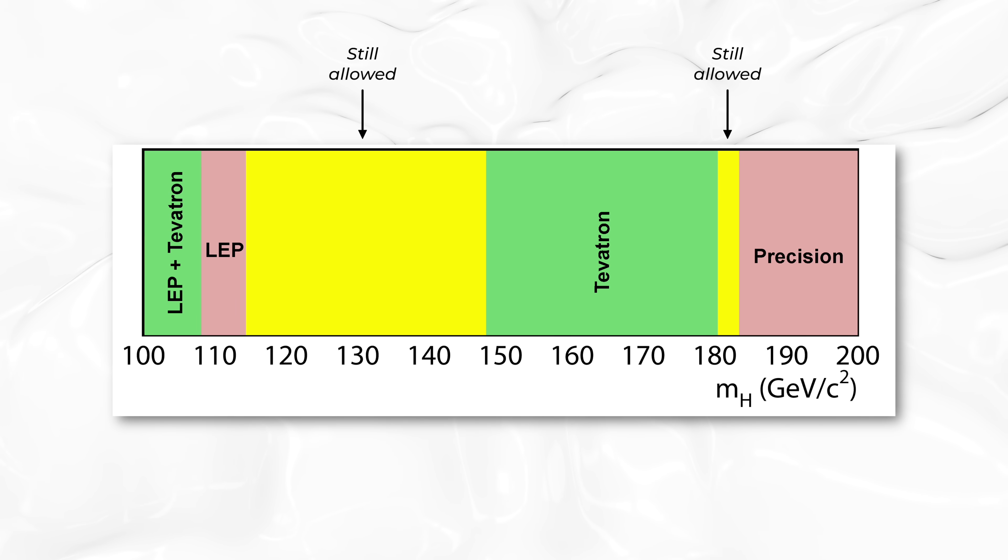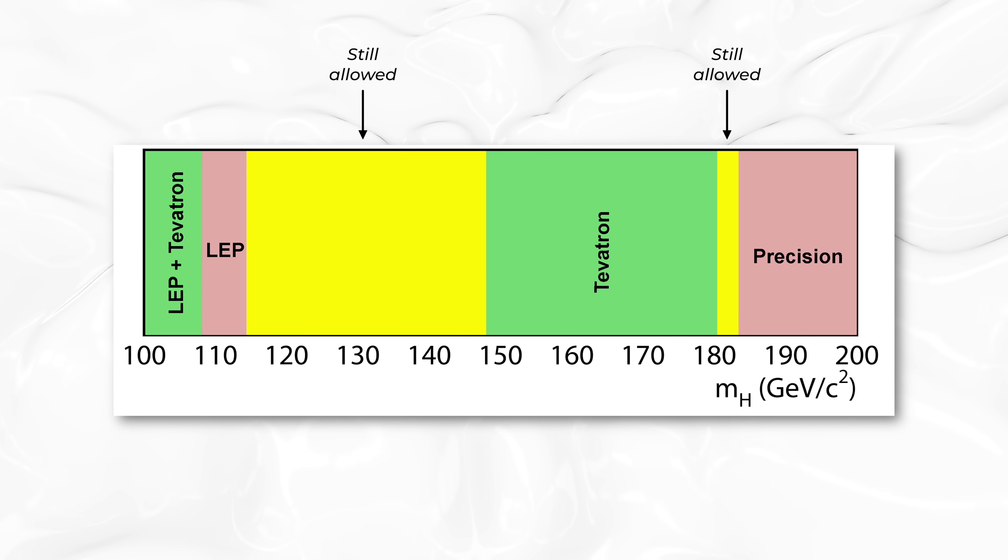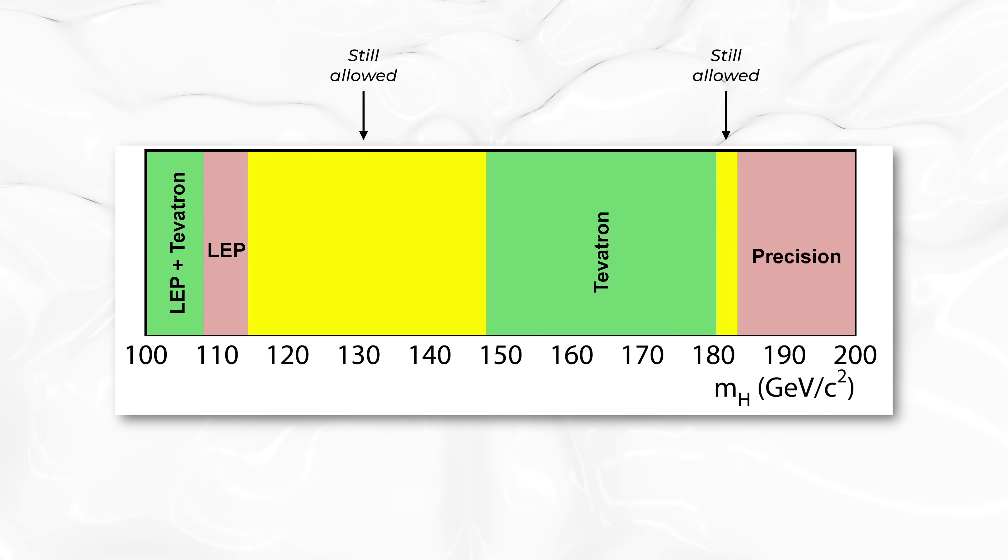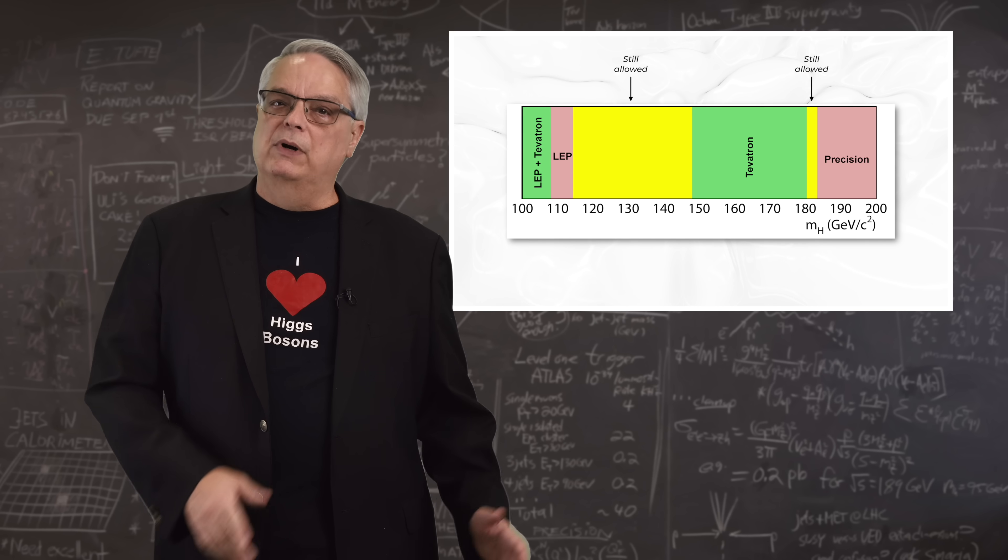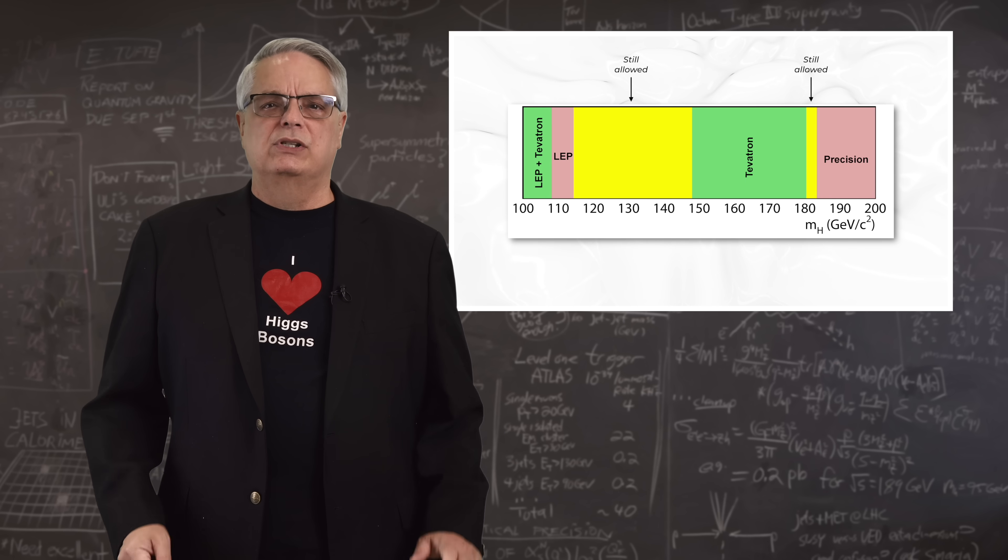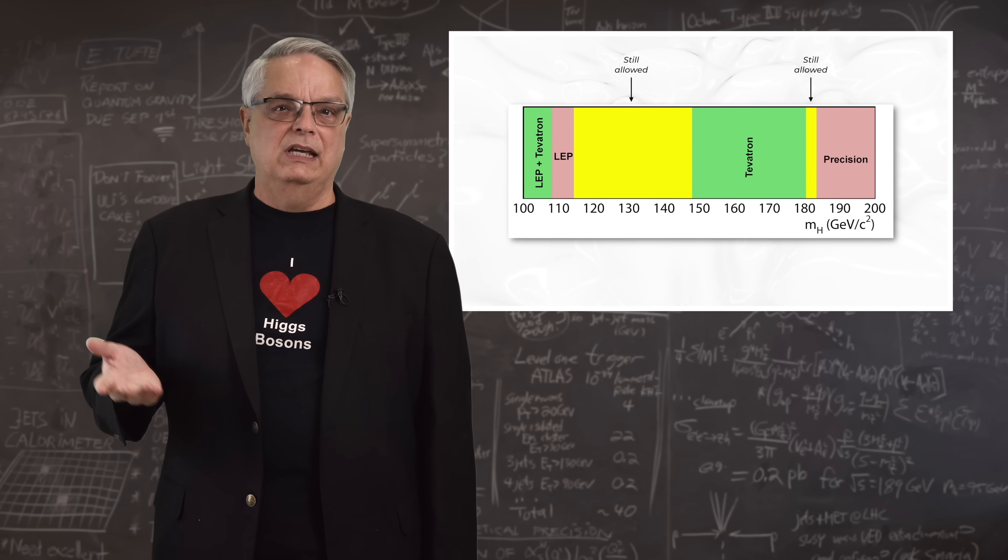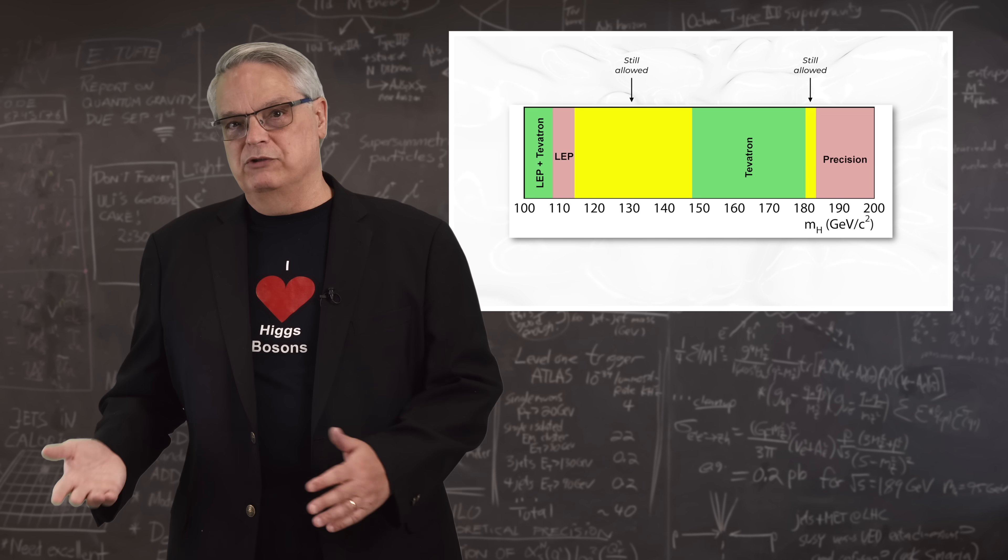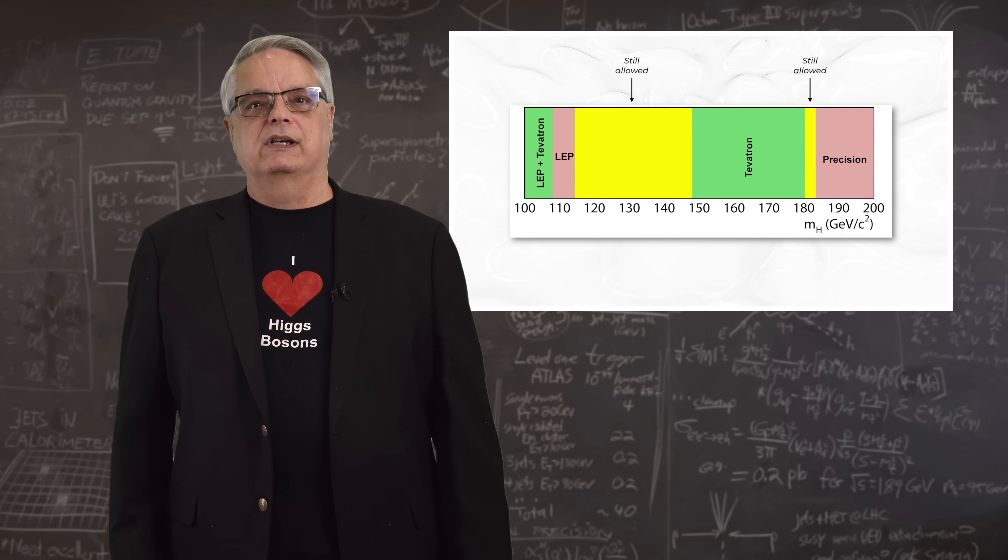There were some intermediate reports of measurements, but by March of 2012, we'd ruled out some more space. Tevatron data hadn't discovered a Higgs boson, but it ruled out the mass range of about 100 to 106, which partially confirmed the earlier LEP range, and also from 147 to 180. Furthermore, the data was starting to show signs that the Higgs boson might exist in the range of 115 to 135. So, that was exciting.